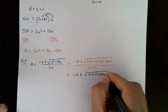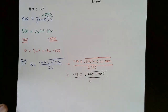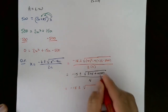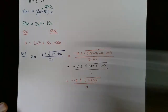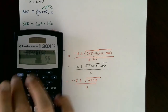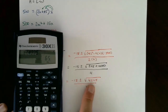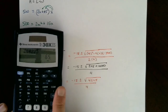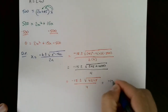4 times 2 is 8, and 8 times 500 is 4000. The denominator is 2 times 2, which is 4. Simplifying further, 4000 plus 225 gives 4225, so we have negative 15 plus or minus the square root of 4225, all over 4. Now let's evaluate that square root. Since this is an application problem we do want exact values: the square root of 4225 is 65, a perfect square. So we get negative 15 plus or minus 65, over 4.